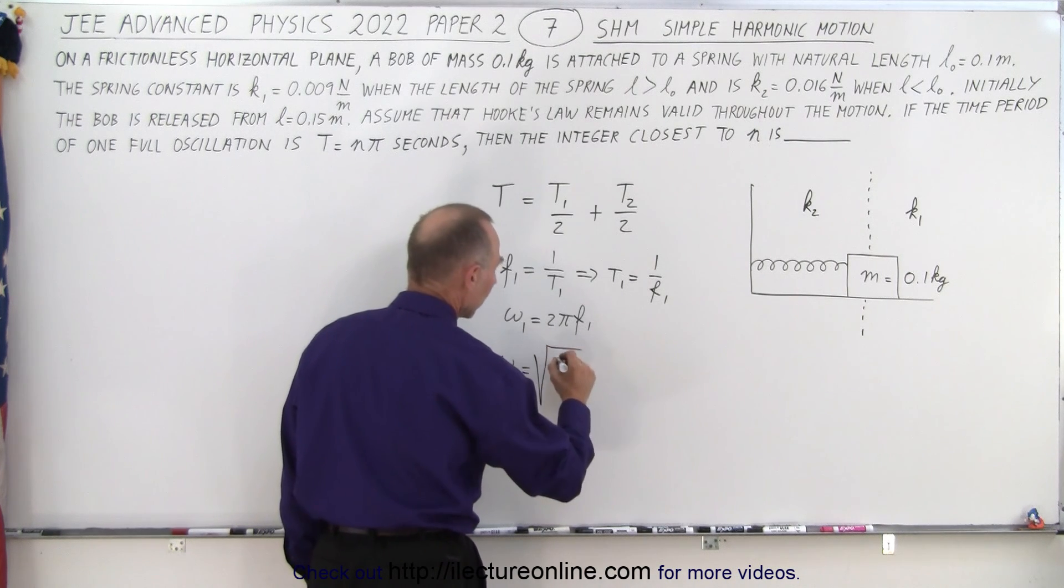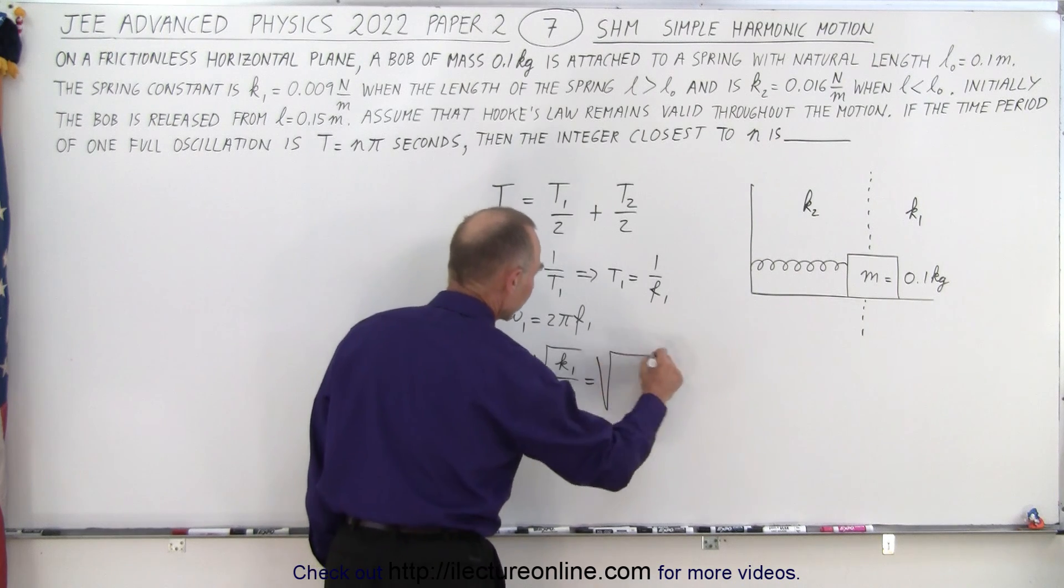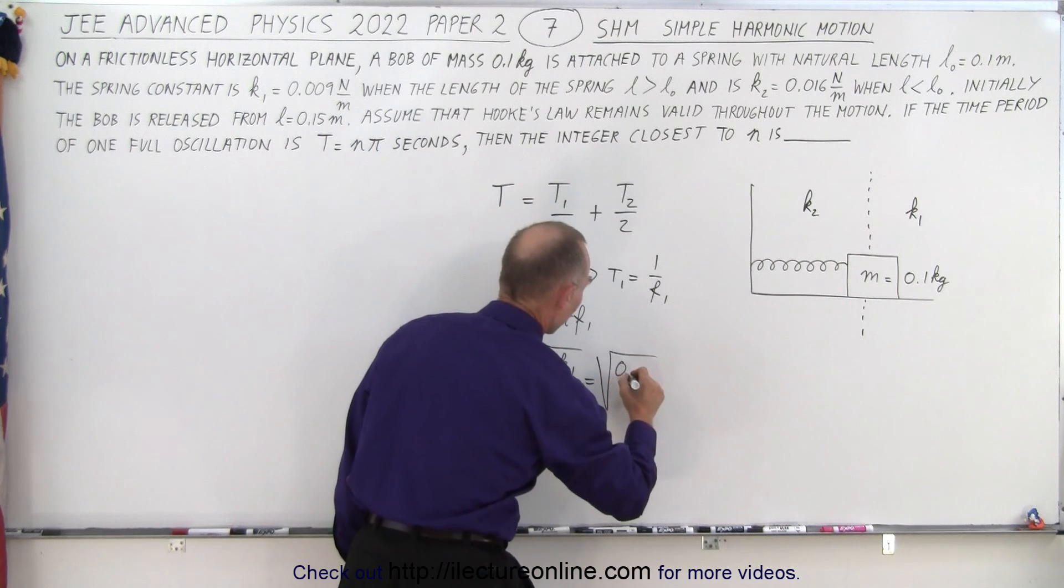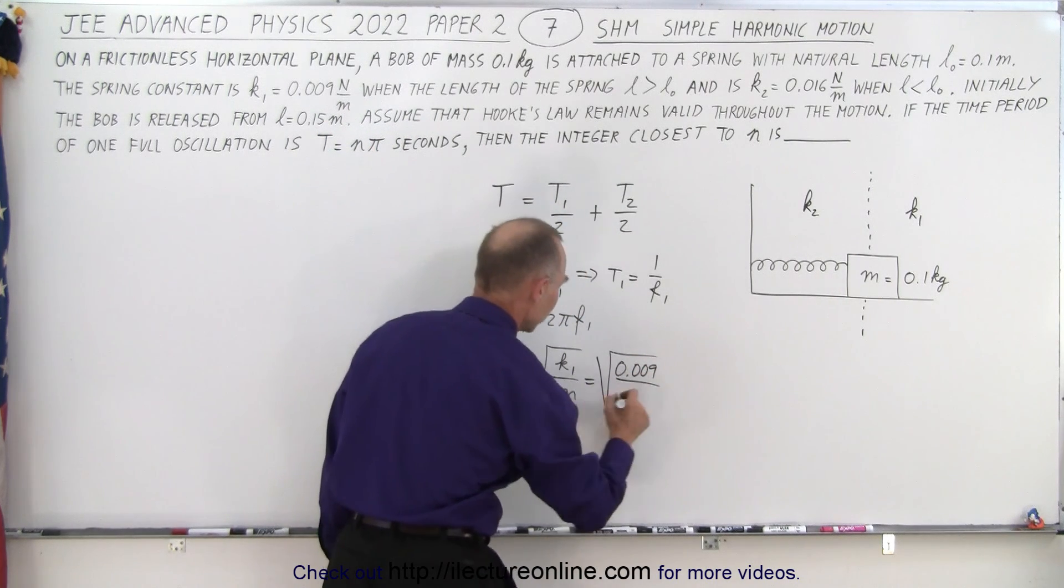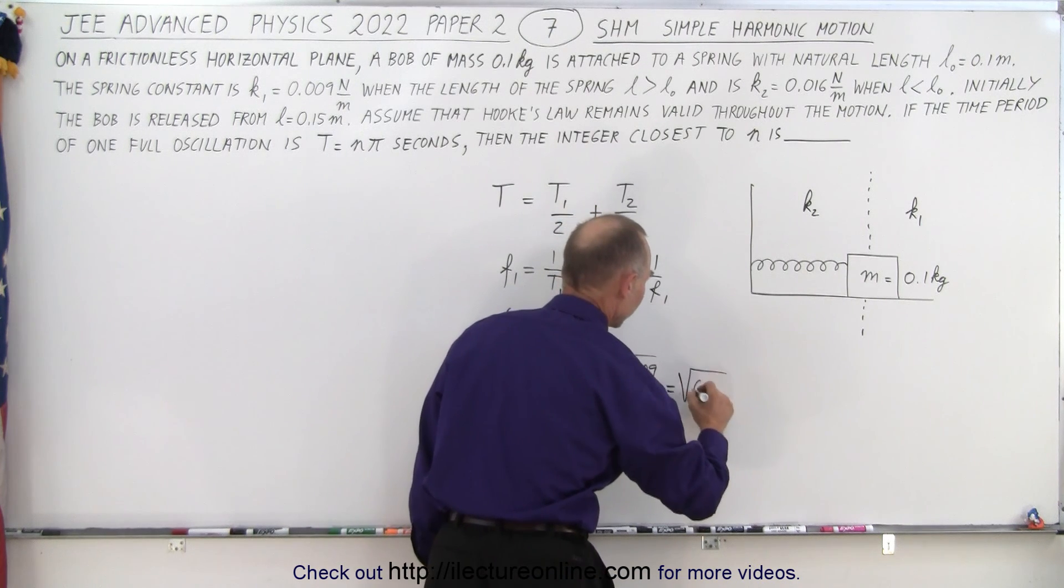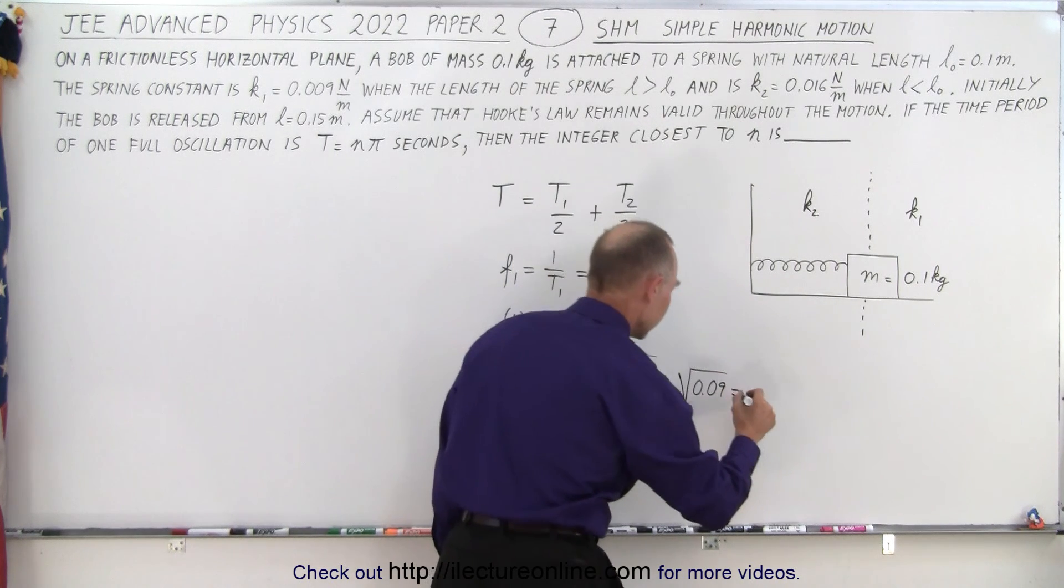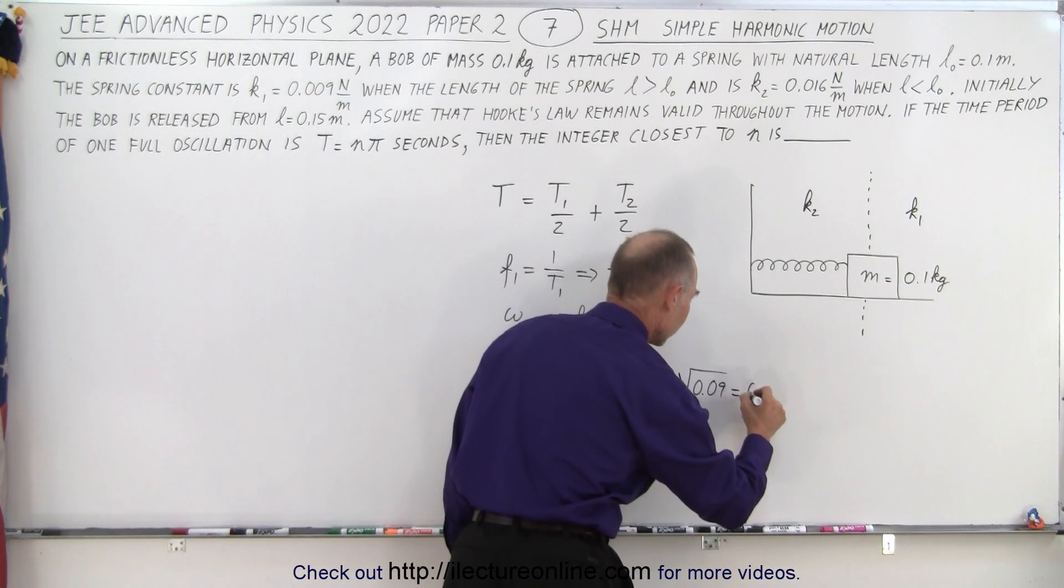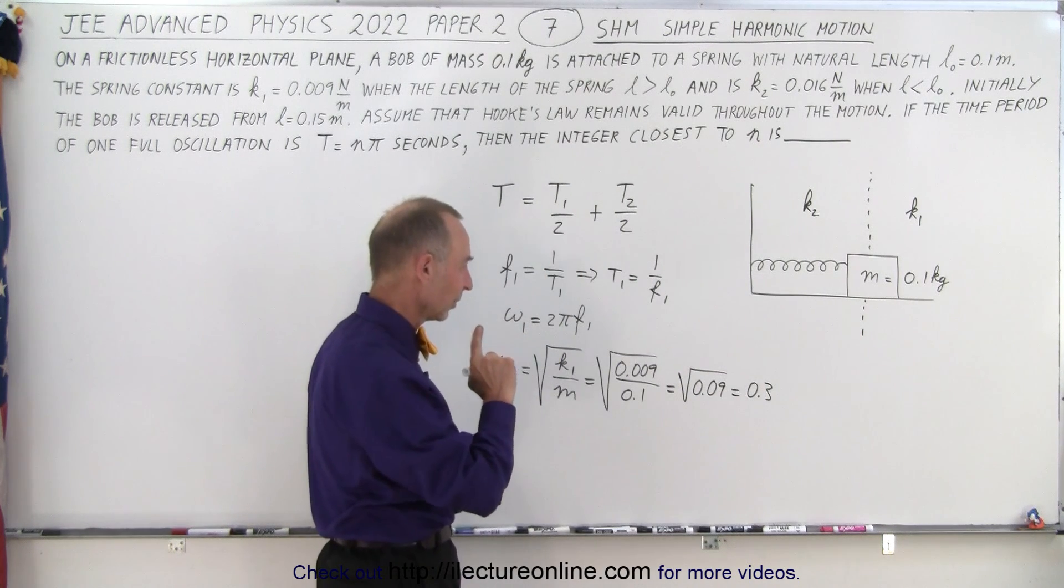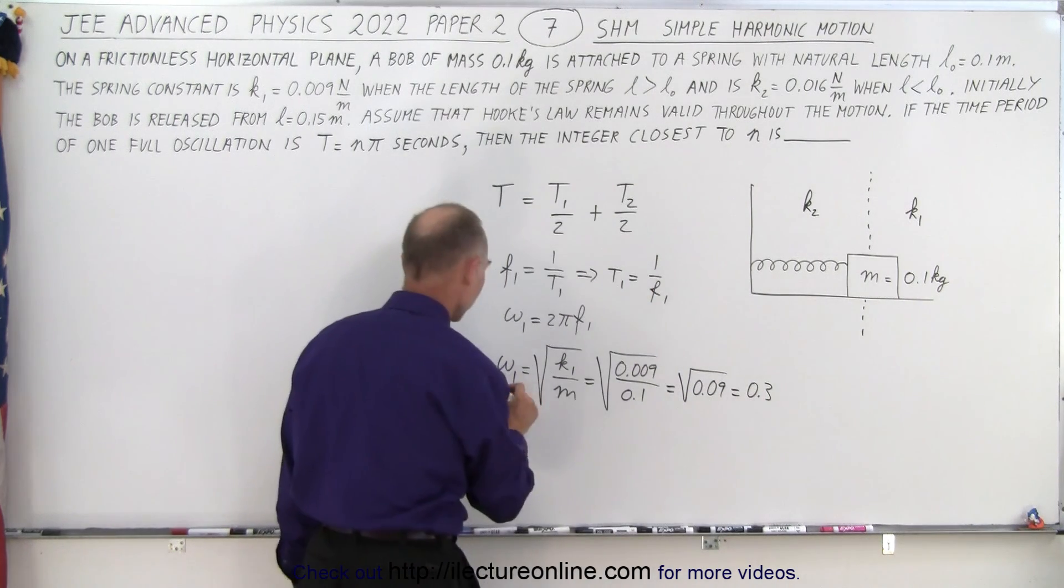Omega 1 equals the square root of k1 divided by the mass. So in this case that's equal to k1 which is 0.009 divided by m which is 0.1. So this is equal to the square root of 0.09 which is equal to 0.3. So this is equal to omega 1.